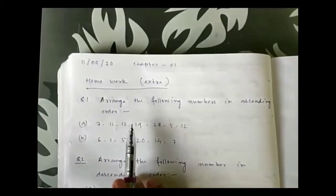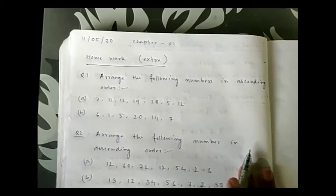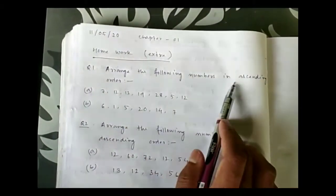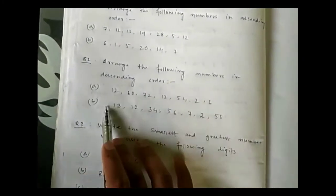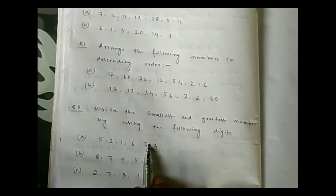I have given some extra homework based on the concepts explained in this video. Question 1: arrange the following numbers in ascending order — parts A and B. Question 2: arrange the following numbers in descending order — parts A and B. Question 3: write the smallest and greatest number using the following digits — parts A, B, and C.